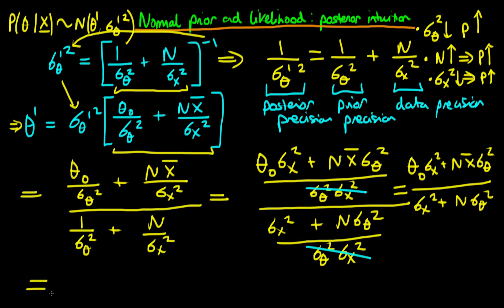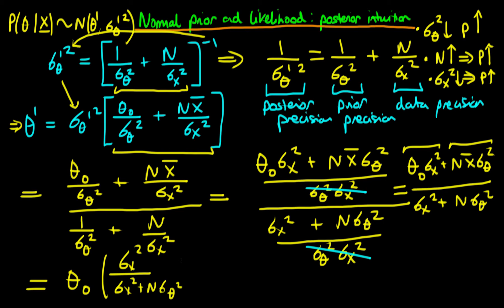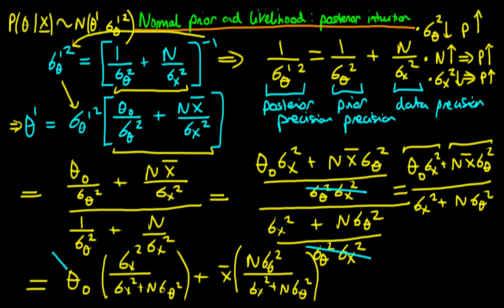Separating this into two fractions, we get that theta prime equals the prior mean theta zero times sigma x squared divided by sigma x squared plus n times sigma theta squared, plus x-bar times n times sigma theta squared divided by sigma x squared plus n times sigma theta squared. So we have one term depending on the prior mean and another term depending on the maximum likelihood estimate of theta, which is x-bar. And both of these terms just correspond to weights.